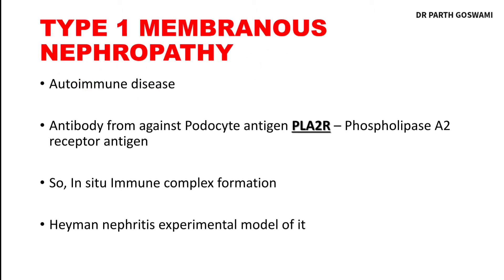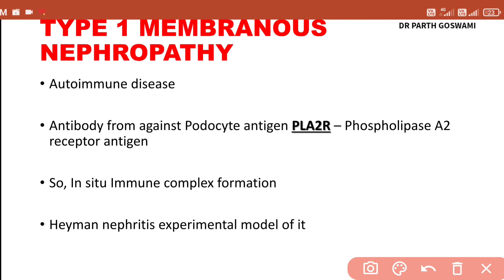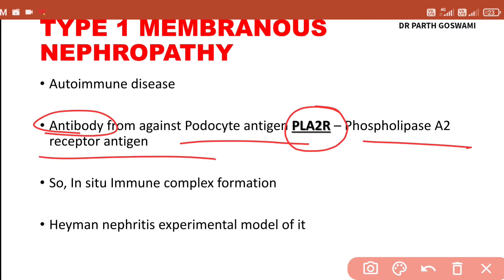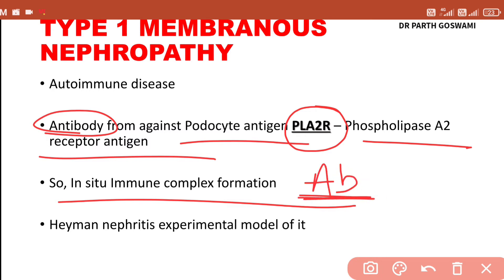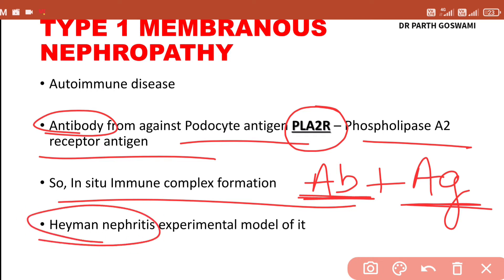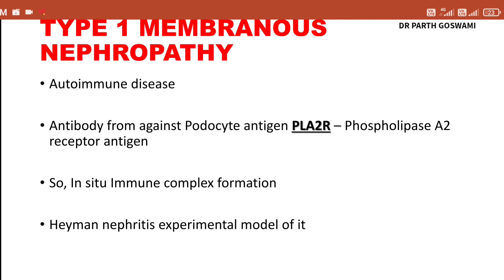Type 1 membranous nephropathy is an autoimmune disease. In this type, the patient will have antibody formation against the podocyte antigen, particularly PLA2R — phospholipase A2 receptor antigen. Antibody forms against this antigen present in the podocyte, so there will be in-situ immune complex formation within the glomerulus. The antigen-antibody complex is present within the glomerulus, not in the blood circulation. The Heymann nephritis is an experimental model that explains this mechanism. This is Type 1 membranous nephropathy with antibody against podocyte antigen PLA2R.